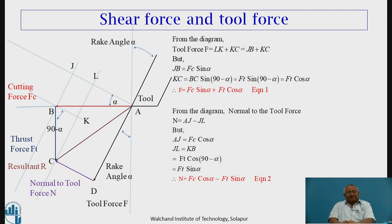Similarly, normal to the tool force N can be represented from the diagram as AJ minus JL. From the diagram, AJ equals FC cos alpha, and JL equals KB, and KB equals FT cos(90 minus alpha), which is FT sin alpha. So normal to the tool force N is represented in terms of cutting force, thrust force, and rake angle as: N equals FC cos alpha minus FT sin alpha.